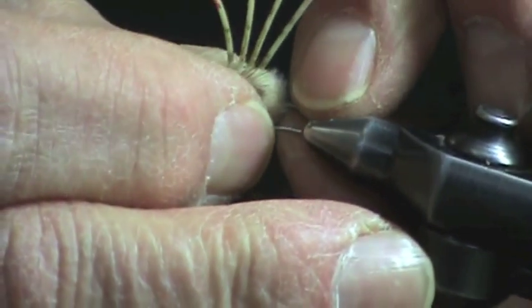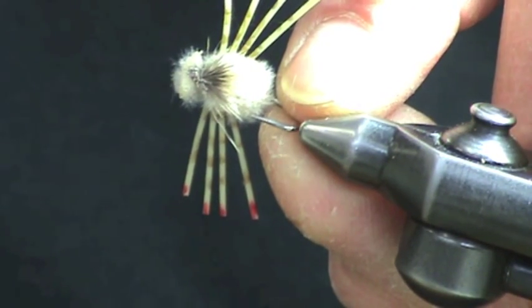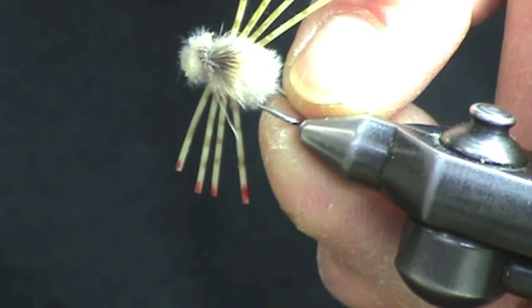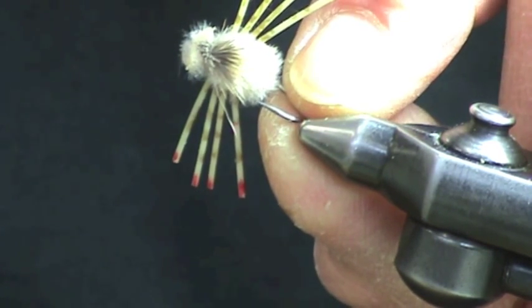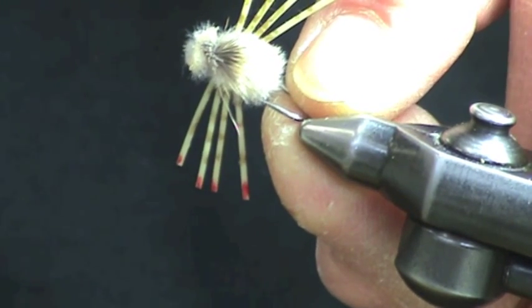Let's see if I can show you what that's going to look like. There's your finished crab. It's a deadly pattern. You can crawl it along the surface or just leave it lay on the bottom, and bonefish and permit love this fly. I've taken a lot of big bonefish and a lot of permit on this fly.